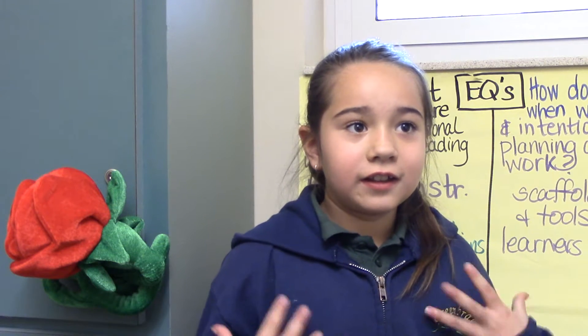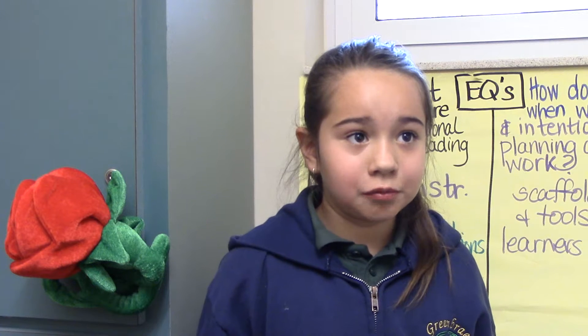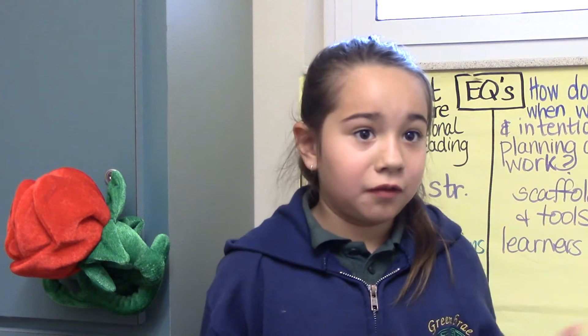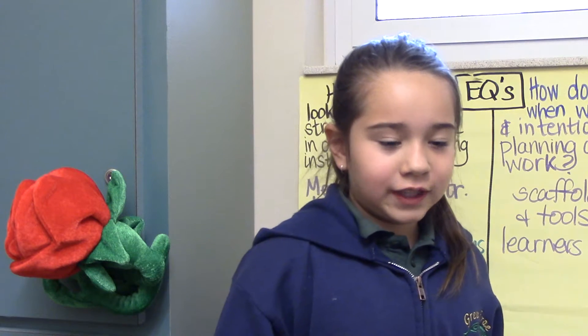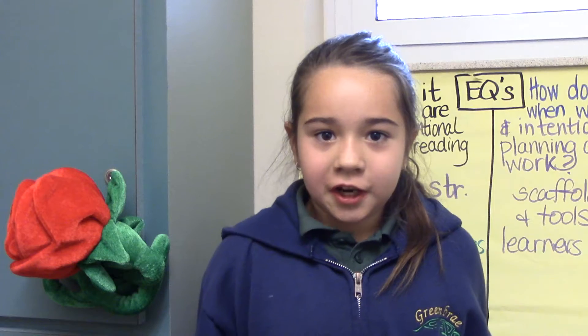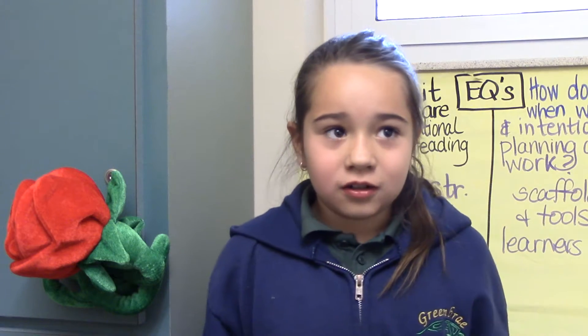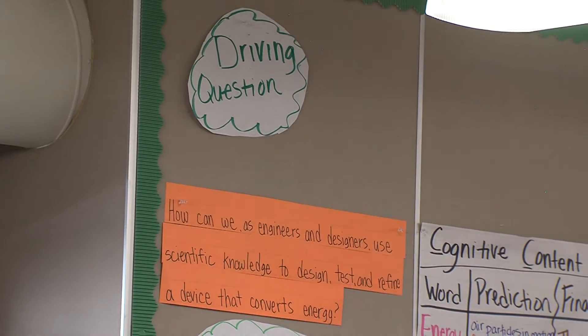When you read the text, it gives a message to your brain about whatever you're reading — in this case, energy. So when you read about the text, you could read about general effects of energy or answers to your driving question. It gives us ideas for our driving question, which is: how can you use energy to convert it to another device?